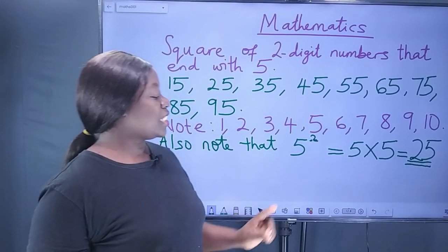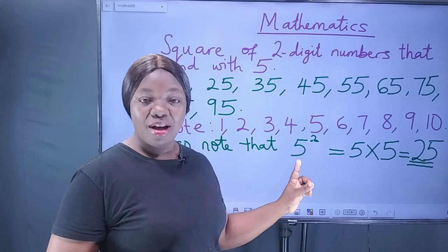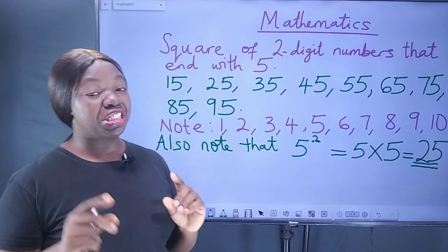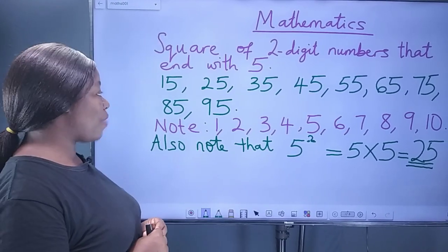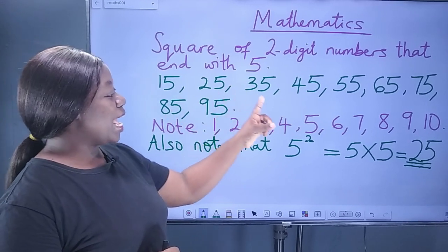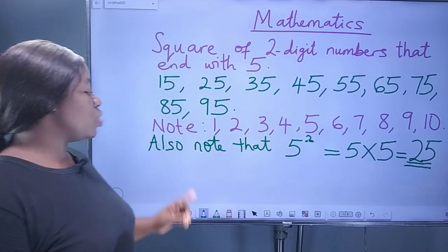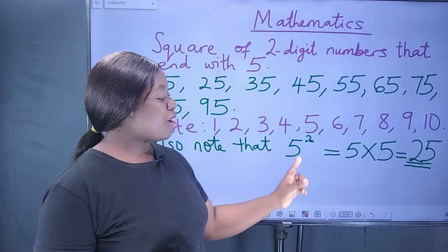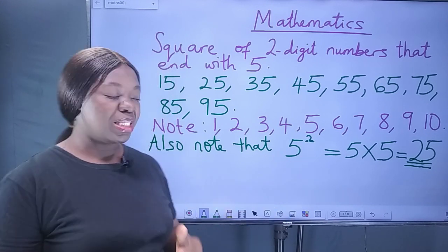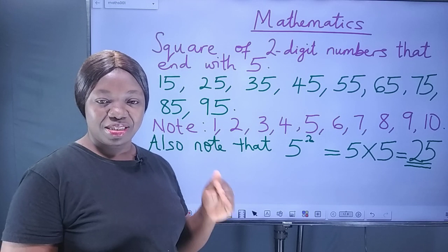Why do we need to take note the square of 5? Because we are dealing with 2-digit numbers that end with 5. You can see they all end with 5. So, take note that the square of 5 is 25 which means 5 times 5.